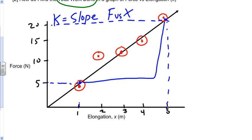So slope equals rise over run. So k equals rise over run, which equals the change in y over change in x, delta y over delta x. Or in this case, because it's a force versus elongation graph, it equals delta F divided by delta x.